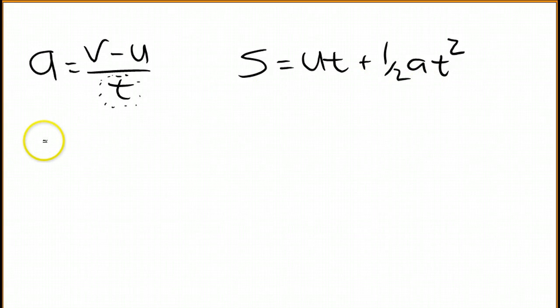So solving the left one for t, I'm going to multiply both sides by t, divide by a, and I'm going to have v minus u, that's final velocity minus initial velocity, over the acceleration.